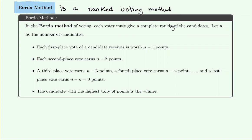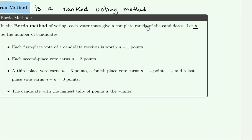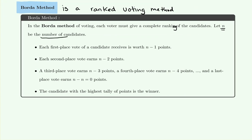Based on how many candidates there are, we let n be the number of candidates. For each example the number of candidates might change, so when using the Borda method make sure you know how many candidates are involved and write that off to the side. The way you assign points is that a first place vote is worth n minus one points.